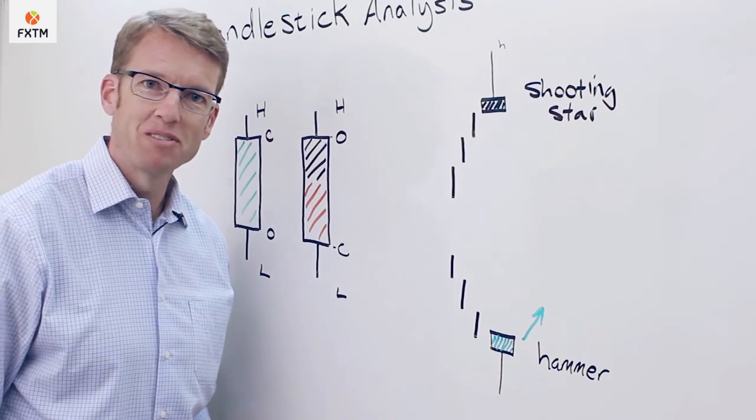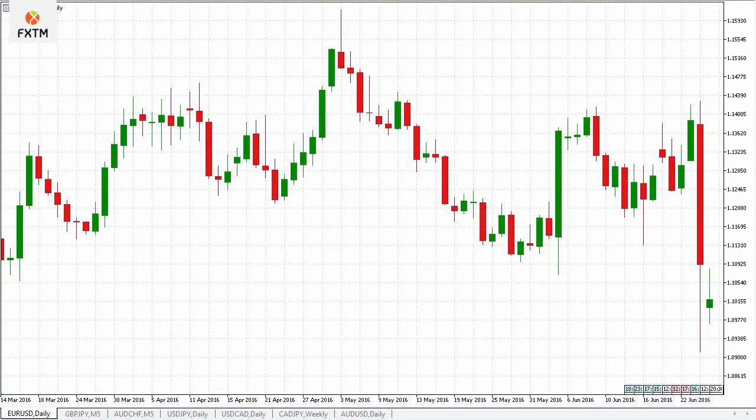So let's take a look at a couple of examples. Here you can see a shooting star on the Euro, and this is in May of 2016. It was at a resistance level, which increases the importance of that particular pattern and its bearish implication, which as you can see played out fairly well.